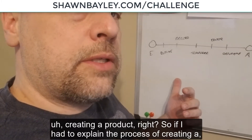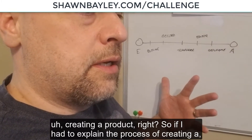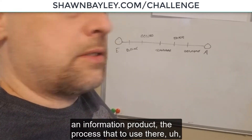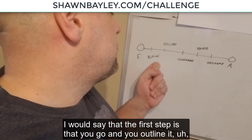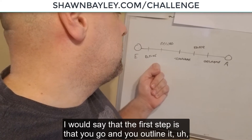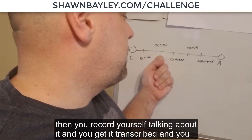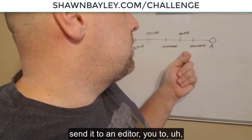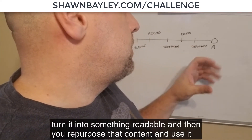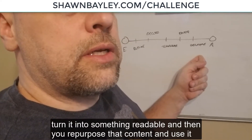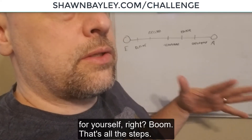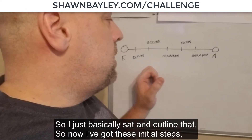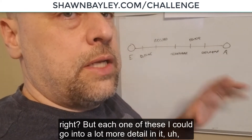So if I had to explain the process of creating an information product, I would say the first step is you go and outline it, then you record yourself talking about it, then you get it transcribed, and you send it to an editor to get it turned into something readable, and then you repurpose that content and use it for yourself. That's all the steps — I just basically sat and outlined that.